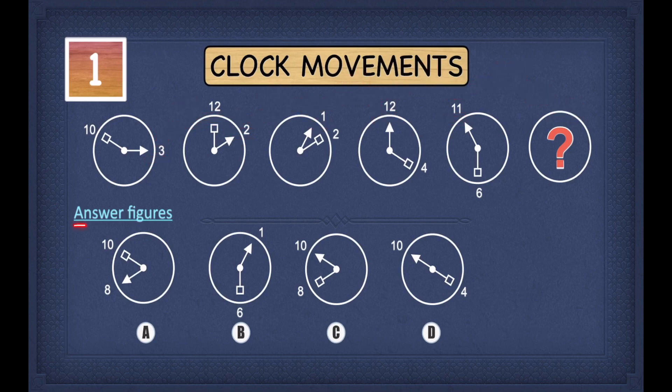So if we find an answer figure where the arrow is not pointing towards the ten, then we cross the option off. So let's start with A. In A, the arrow is pointing towards eight. It is not ten, and therefore, cross out A. In B, the arrow is pointing towards one. That's not ten either, so cross out B as well.